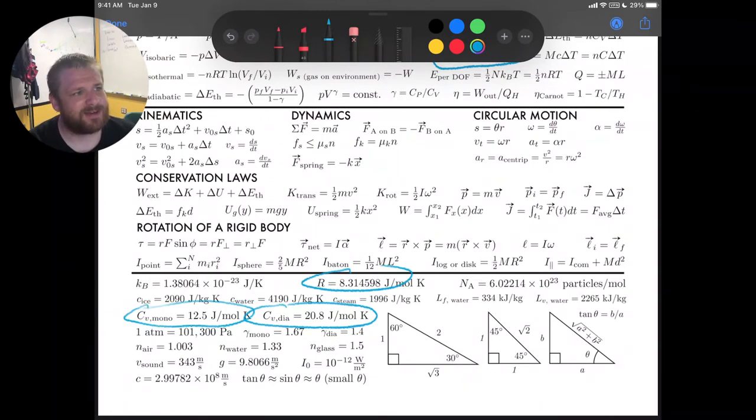Q depends on process, so we can calculate Q for a constant pressure process now by using this expression. We can also calculate Q for a constant volume process because it's just equal to the change in the thermal energy when the work is zero.